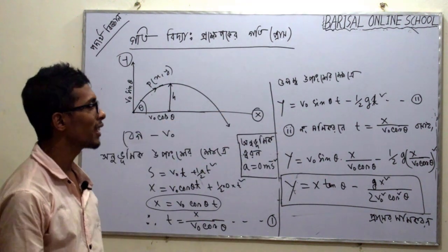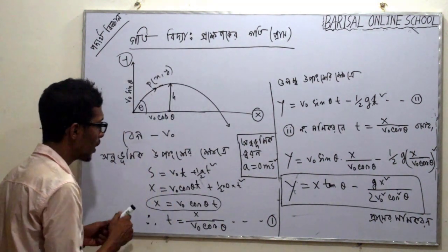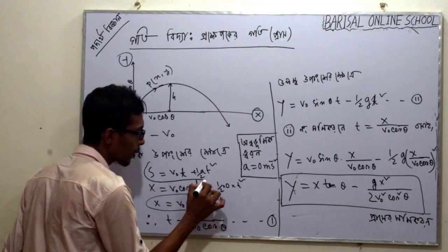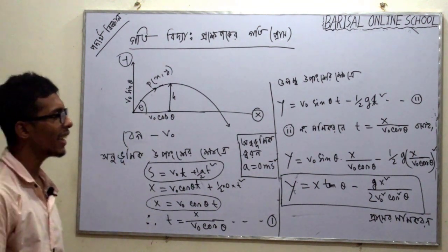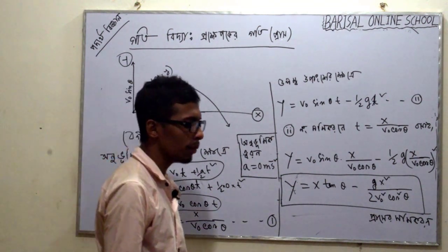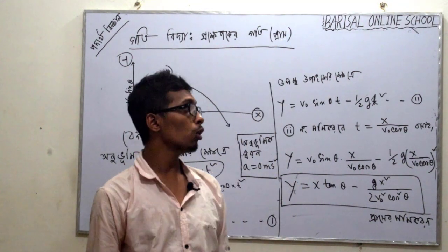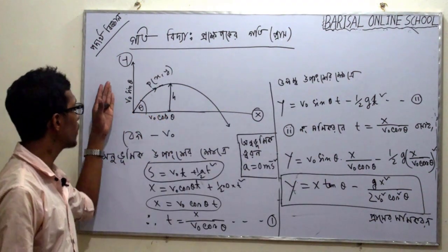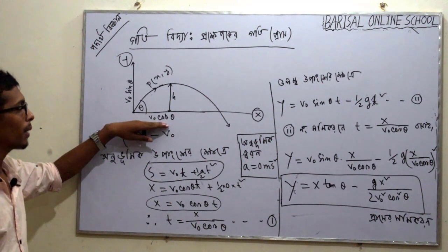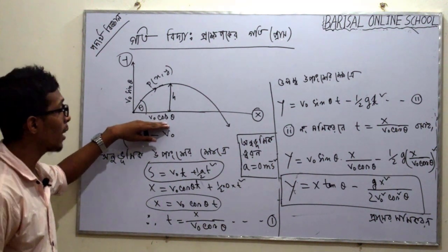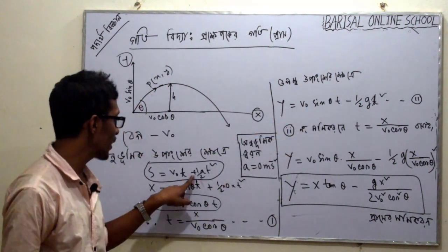s equal to ut plus half at squared. So this equation applies here. The upward direction is taken as positive, and the downward direction is negative. We are considering the vertical motion under this framework.